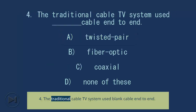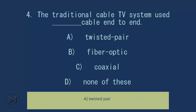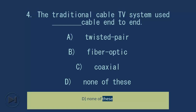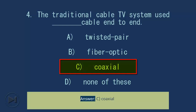Question 4: The traditional cable TV system used blank cable end-to-end. A. Twisted pair. B. Fiber optic. C. Coaxial. D. None of these. Answer: C. Coaxial.